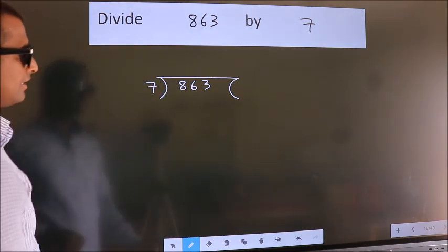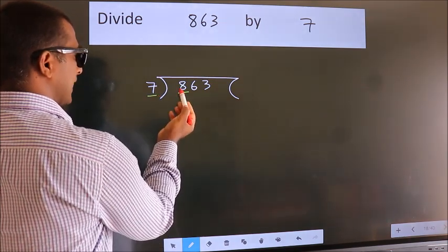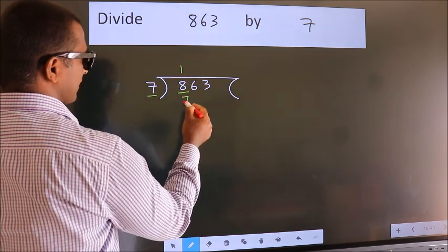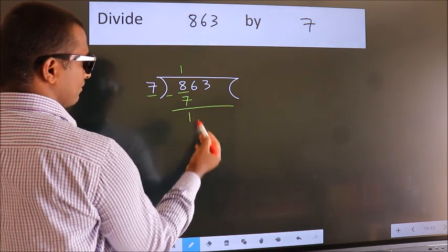Next. Here we have 8, here 7. A number close to 8 in the 7 table is 7 once 7. Now, we should subtract. We get 1.